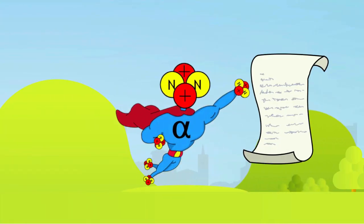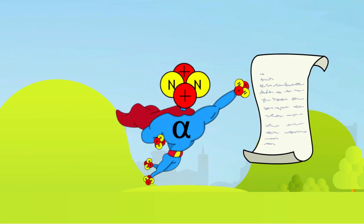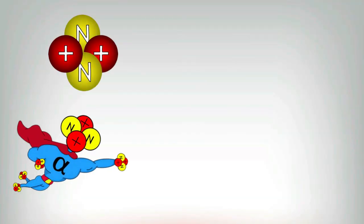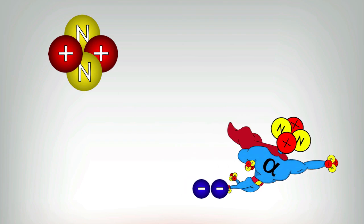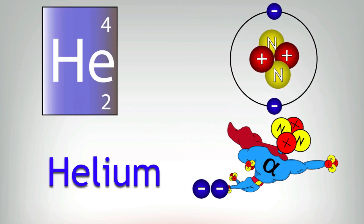Once you stop it, it sits and waits for a couple of electrons. So remember we said it's got two protons and two neutrons? When it gathers those electrons, it becomes a helium nucleus, which is pretty harmless.